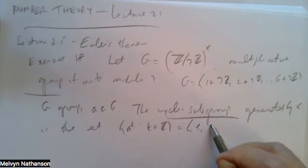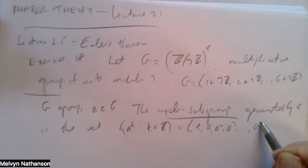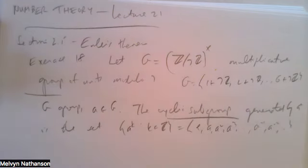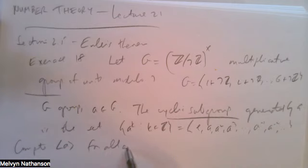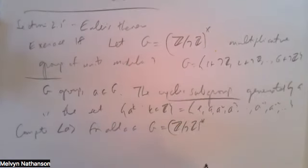So this is {e, A, A², A³, ...} and also the inverses A⁻¹, A⁻², and so on. Of course, if G is finite, this is a finite group, and it suffices to look at just the positive powers of A. So let's compute the cyclic subgroup generated by A for all A in my group G, the multiplicative group modulo 7.